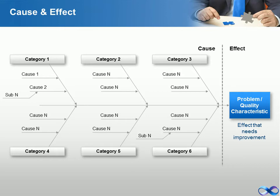The fish bone diagram identifies many possible causes for an effect or problem. It can be used to structure a brainstorming session and immediately sorts ideas into useful categories. The cause and effect diagram illustrates multiple levels of potential causes, inputs, and ultimate effects, outputs, of problems that may arise in the course of business.